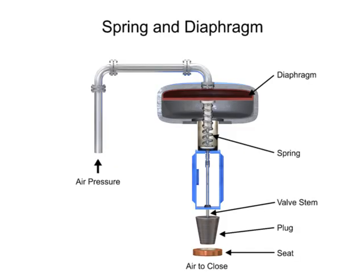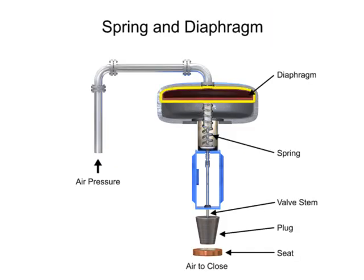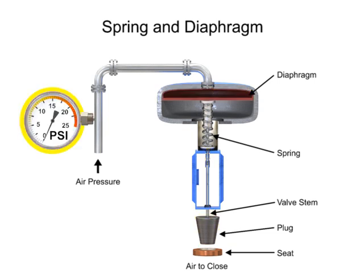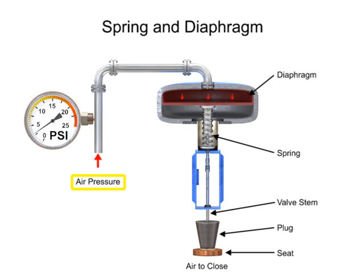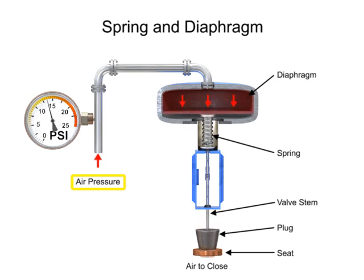As the name suggests, the spring and diaphragm actuator uses a spring and a diaphragm to move the valve stem and plug. A 15 PSI pneumatic signal enters the housing at the top of the actuator. As pressure is exerted on the diaphragm, a downward force is applied against the spring which moves the restrictor. The diaphragm moves until it creates an equal but opposing force against the spring, at which time the motion stops as the plug meets the valve seat.